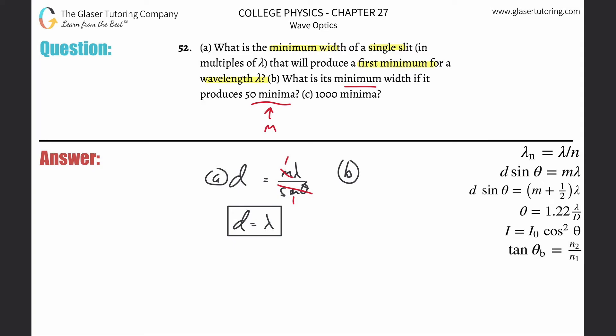And therefore, the math is literally going to work out the same way. This is now 50 lambda. Okay, and then c, I think you see the pattern. That's going to be 1000 lambda. It's all the same math as letter a.